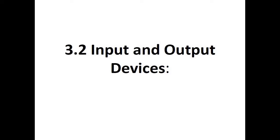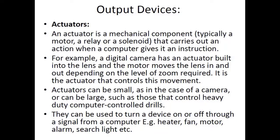Now we are going to start output devices. As discussed before, output devices are those devices which are used to get a result from a computer. The first output device is an actuator — a mechanical component, typically a motor, relay, or solenoid. In cameras and labs it is mostly considered to be a solenoid that carries out an action when a computer gives it an instruction or signal. For example, a digital camera has an actuator built into the lens and the motor moves the lens in and out.